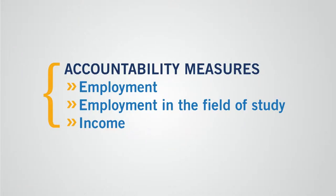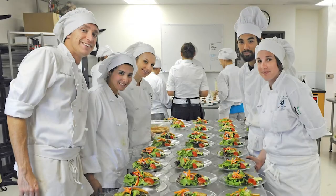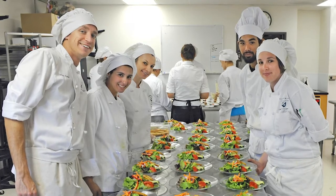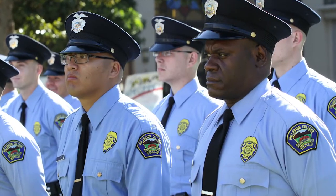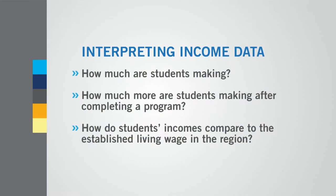No income is reported to the unemployment insurance system for these individuals. For accountability purposes, we look at three areas: Employment, employment in the field of study, and income. These measures give us valuable information about how many students found jobs after completing a program and how many are working in the field or a related field of the program they completed. With income, the question is not just how much students are making, but is there an income gain — that is, how much more are they making after completing a program? A second factor is whether the income is as much or more than the established living wage in the region.